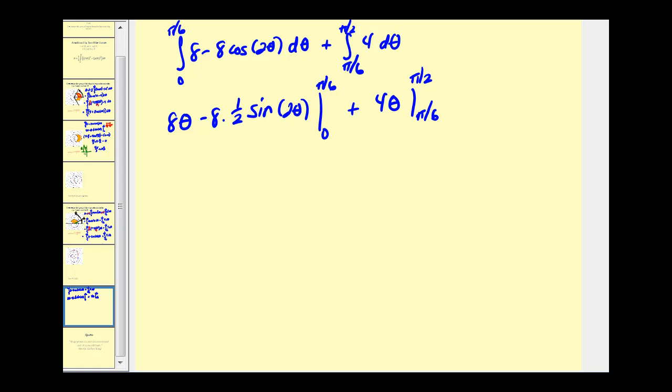Let's go ahead and perform the substitution. So we'll have eight times pi over six minus this will be four sine two times pi over six or pi over three. Minus, and then when theta is zero, these will both be zero. And then for the second integral we'll have four times pi over two minus four times pi over six.